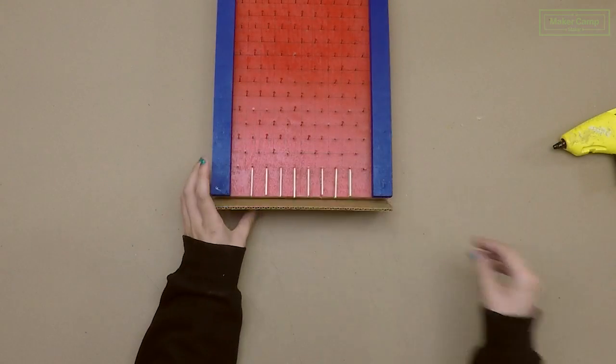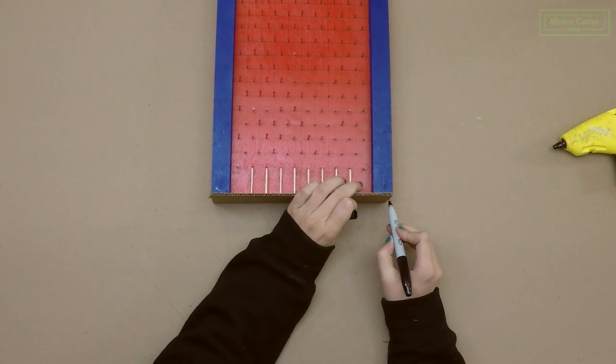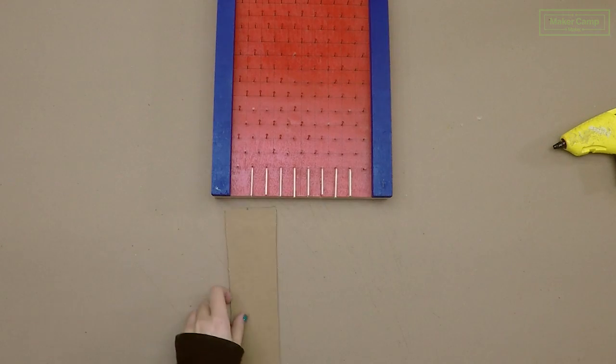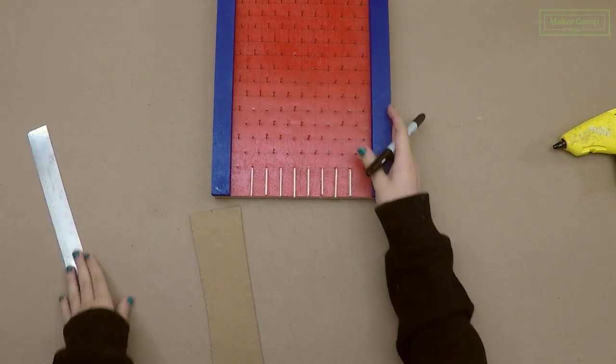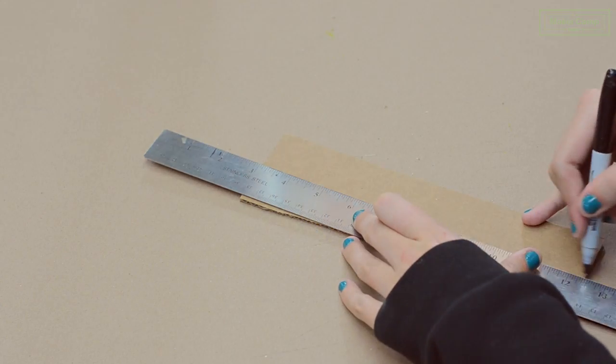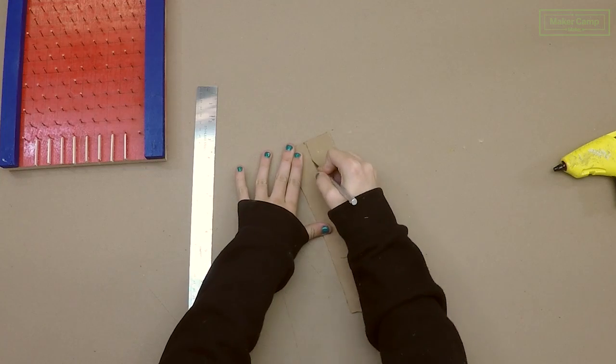First measure the height and width of your board. Mark it on your cardboard and cut your cardboard.